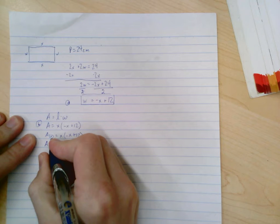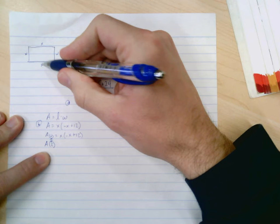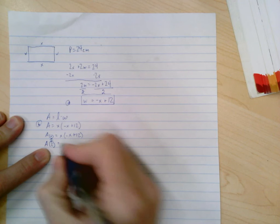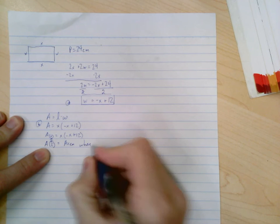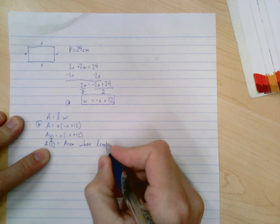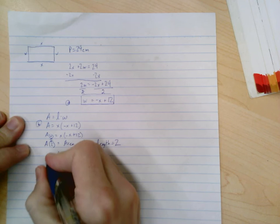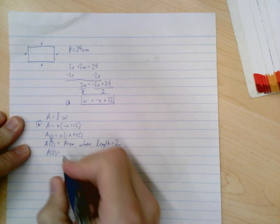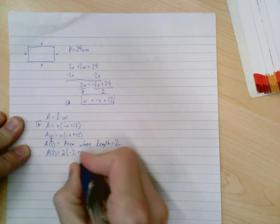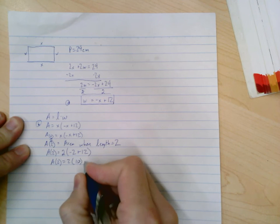Well, 2 has replaced the x, and what was x? Well we remember from the beginning of the question that x was the length. So if x is the length, this means the area when the length equals 2. And then for the second part of that, it says to calculate A(2). So we'll go ahead and put 2 in for x. So we'll say A(2), or the area when the length is 2, is equal to, and we'll put 2 in for the x, and we've got A(2) equals 2 times 10, which is 20.